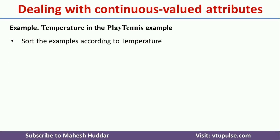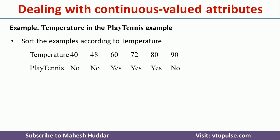Let us take an example to understand how to convert a continuous valued attribute into a discrete valued attribute. In this case, temperature is the attribute and platonics is the target label. The temperature has values like 40, 48, 60, 72, 80, and 90.